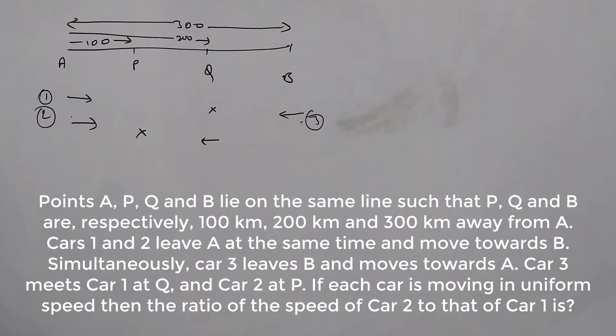If each car is moving at uniform speed, then the ratio of the speed of car 2 to that of car 1 is what? We need to find out s2 by s1, where s2 is the speed of car 2 and s1 is the speed of car 1.